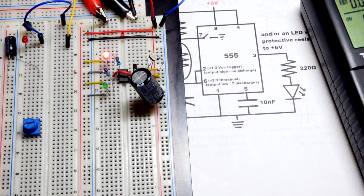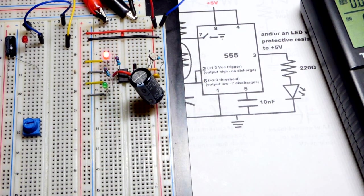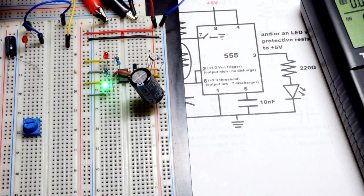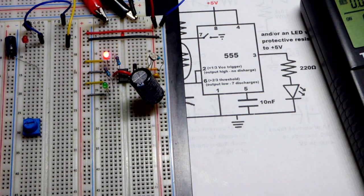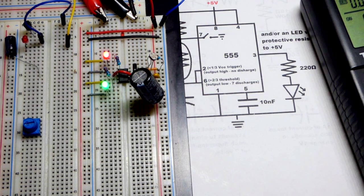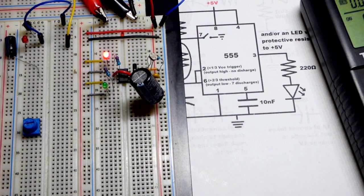So, in any case, that's really about it for this circuit. We can make a light dependent, astable mode, 555 timer, right there. That simple. So, thanks for watching. I will see you in the next video.